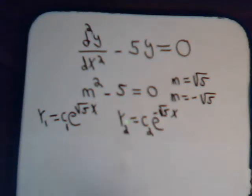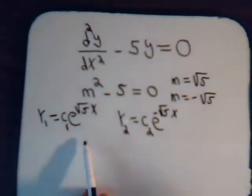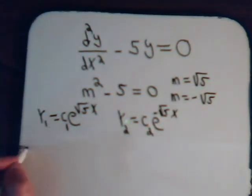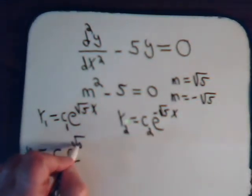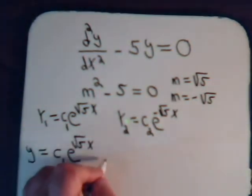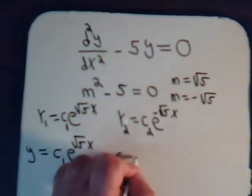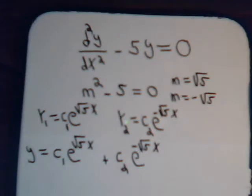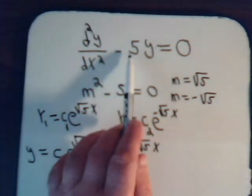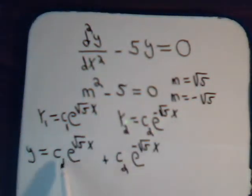What we said in the previous video is that we can expect two different solutions to a second order differential equation. Furthermore, if we add them together — take a linear combination of these — that is also a solution to the differential equation. So in general, y equals c1 times e to the square root of 5 times x, plus c2 times e to the minus square root of 5 times x. Let's go ahead and take the first and second order derivatives of this, put them into the equation, and see if it does come out to zero.